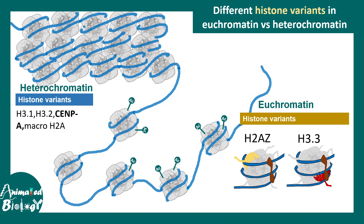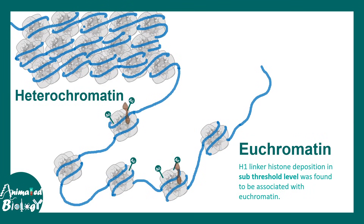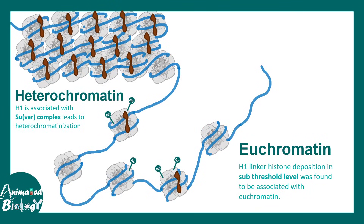All these variants lead to chromatin compaction rather than opening up the chromatin. So differences in histone composition and histone modifications all determine the overall organization of the chromosome. H1 histone variants are also peculiar to heterochromatin regions. H1-associated nucleosomes attract specific components such as the SUVAR complex, leading to recruitment of protein molecules that drive heterochromatinization.